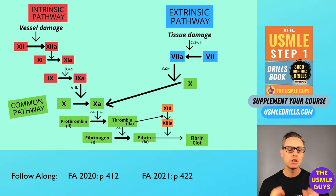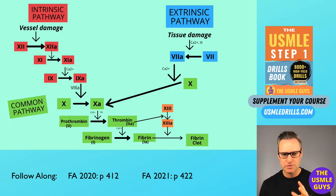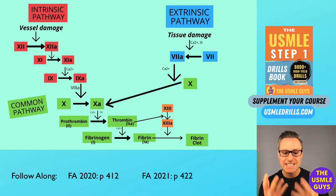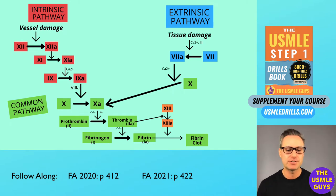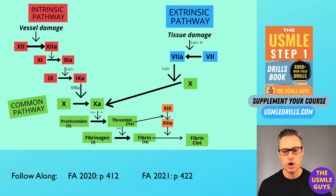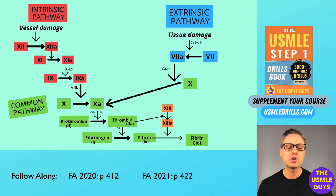Low molecular weight heparin works by binding to antithrombin, which is a serine protease inhibitor. This leads to a conformational change that accelerates its inhibition of factor 10 in the conversion of prothrombin to thrombin. As a result, the conversion of fibrinogen to fibrin simply doesn't occur. Low molecular weight heparin is also able to directly inhibit thrombin.